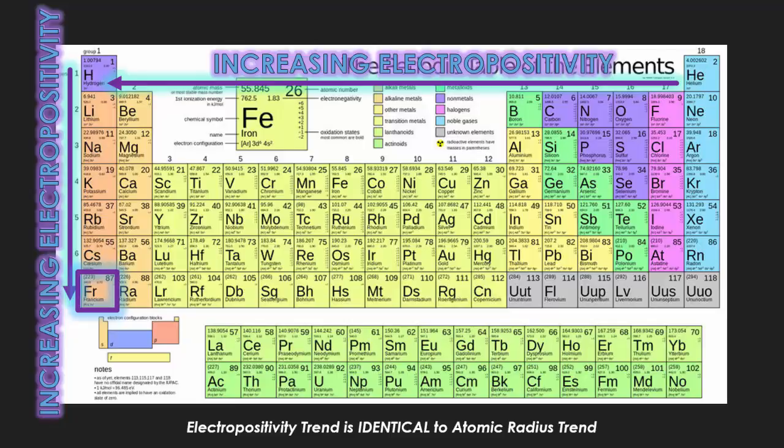So francium would be the most electropositive element because it is the most likely and quickest to give up that lone valence electron. Remember, metals form cations. Electropositivity is measuring who is the best metal.